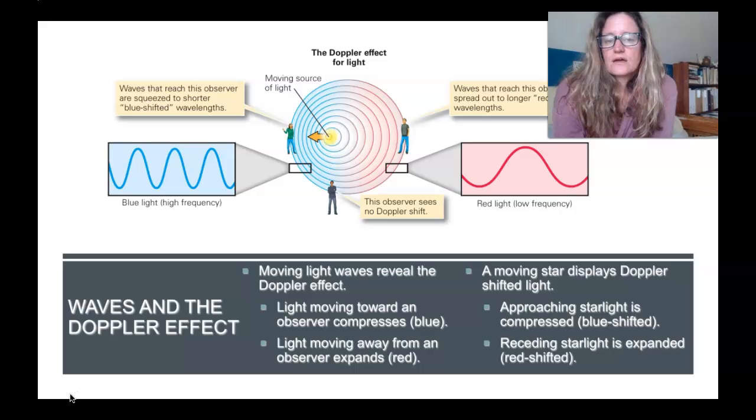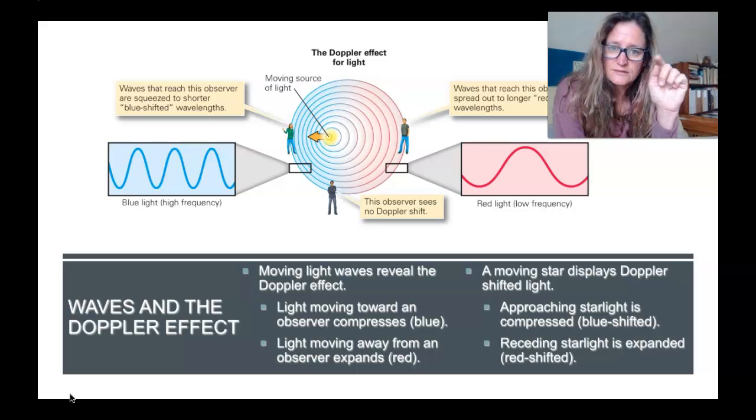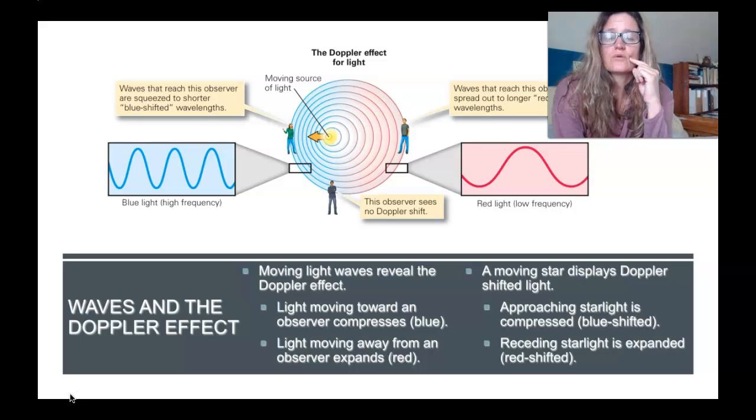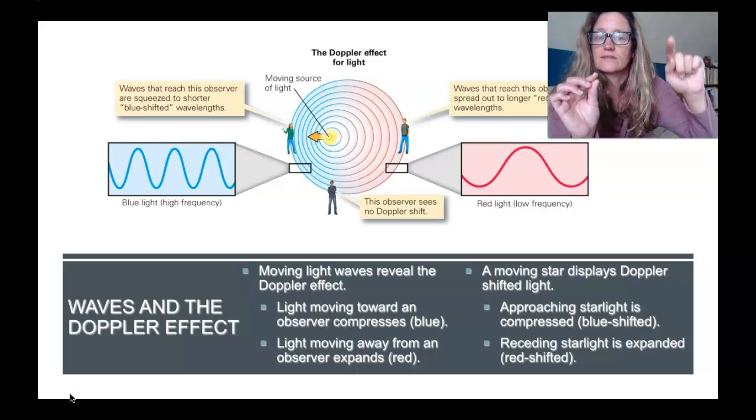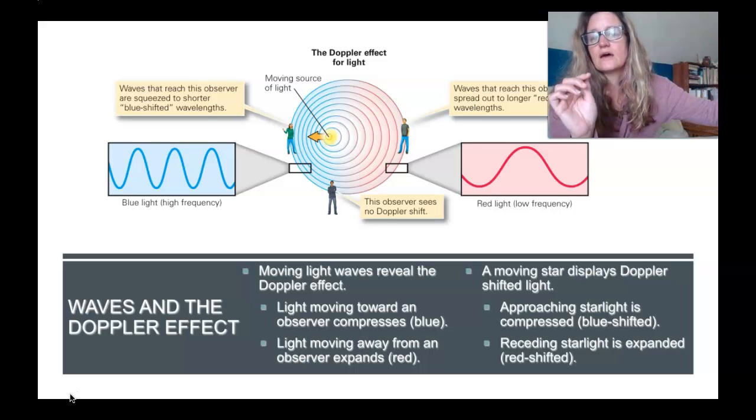Light waves act the same way. Those wavelengths are different colors, so colors have a different wavelength of light. As the light is coming towards you and the wavelength is compressed, that is a blue wavelength. And then as it passes you and moves away and the wavelength is expanded, that is a red wavelength.